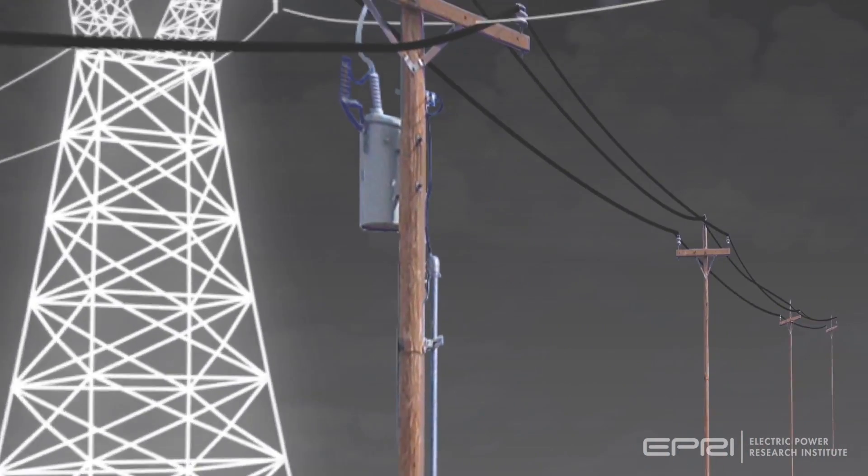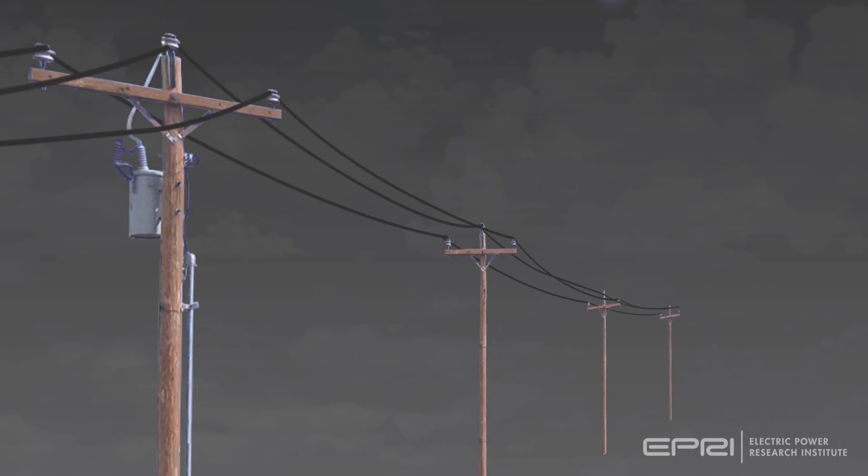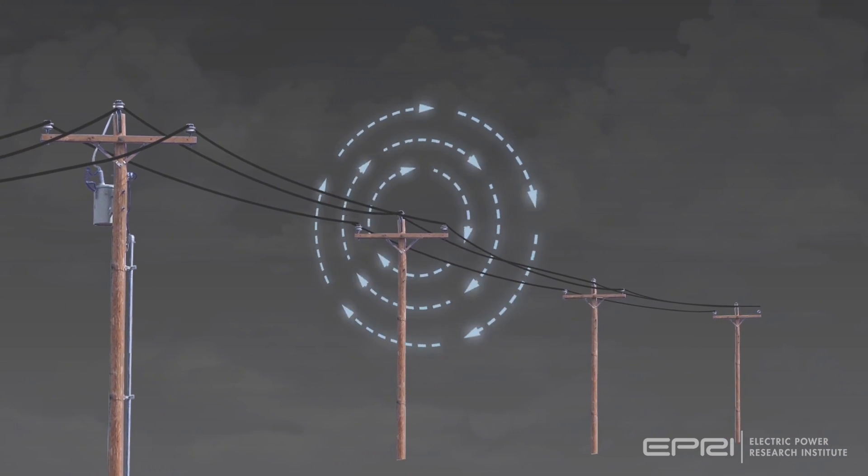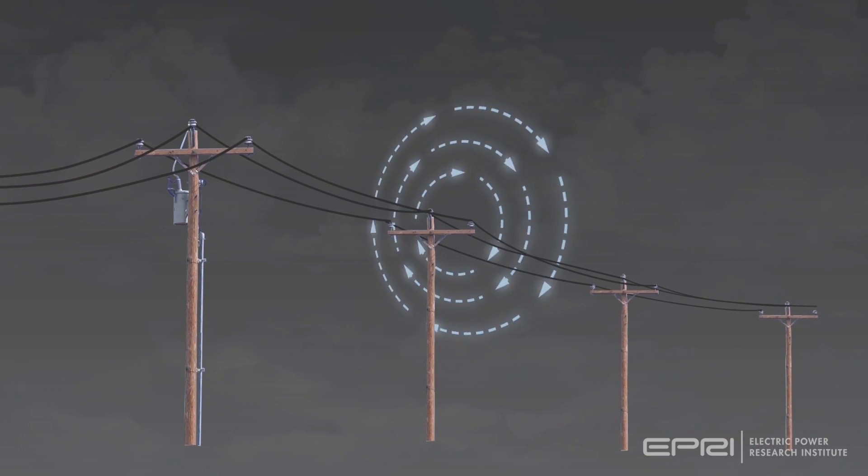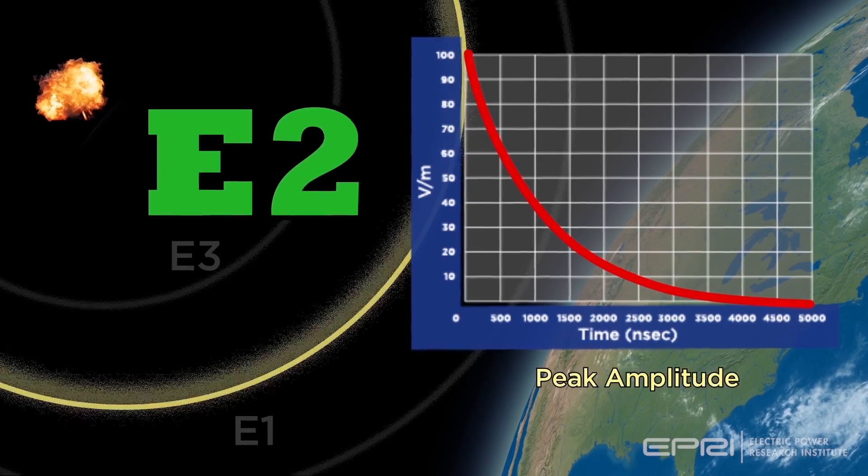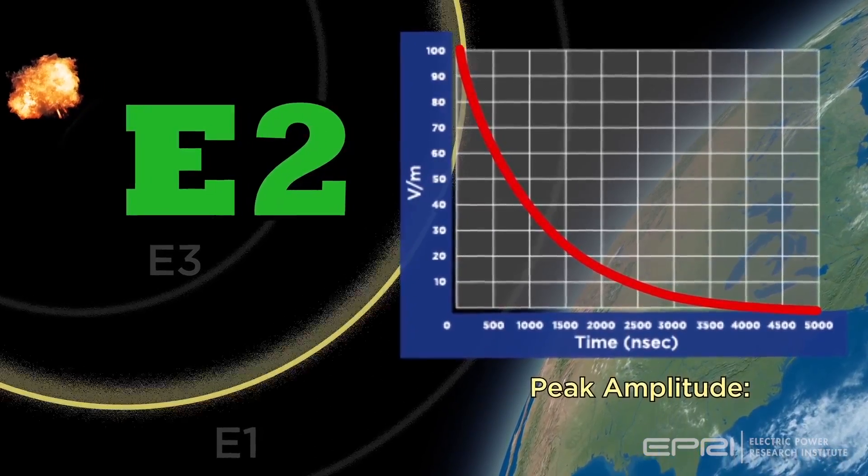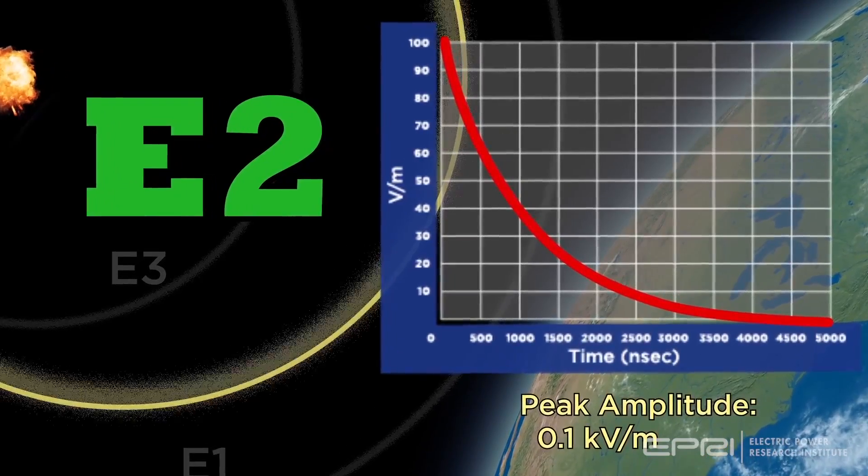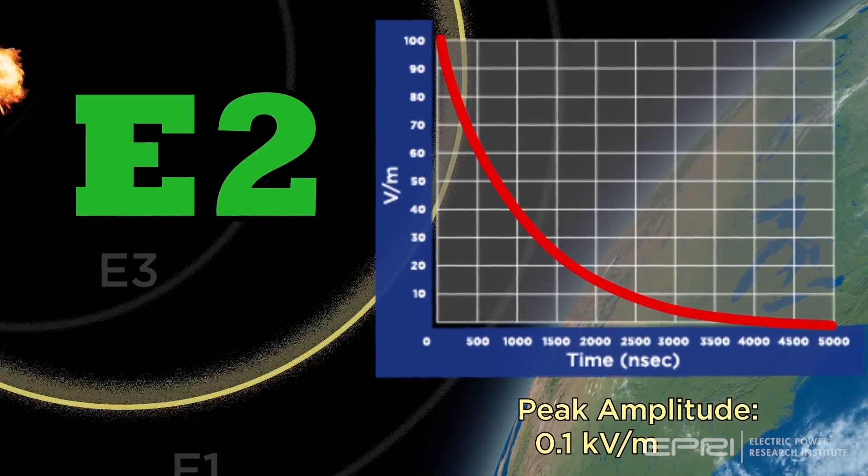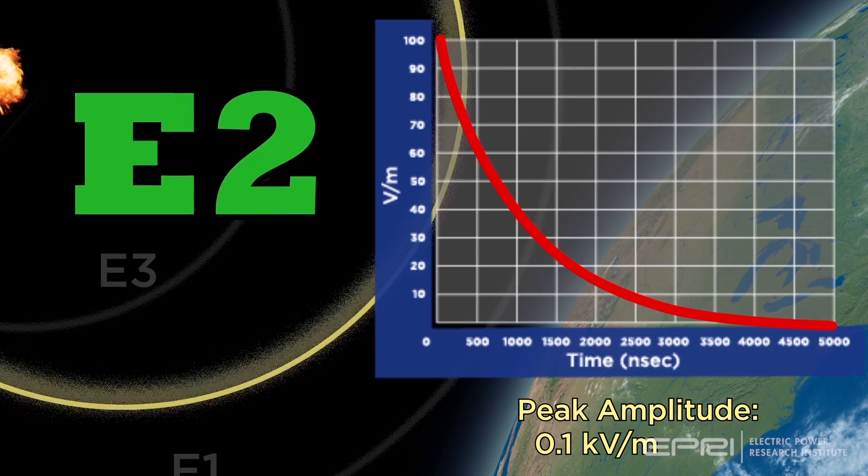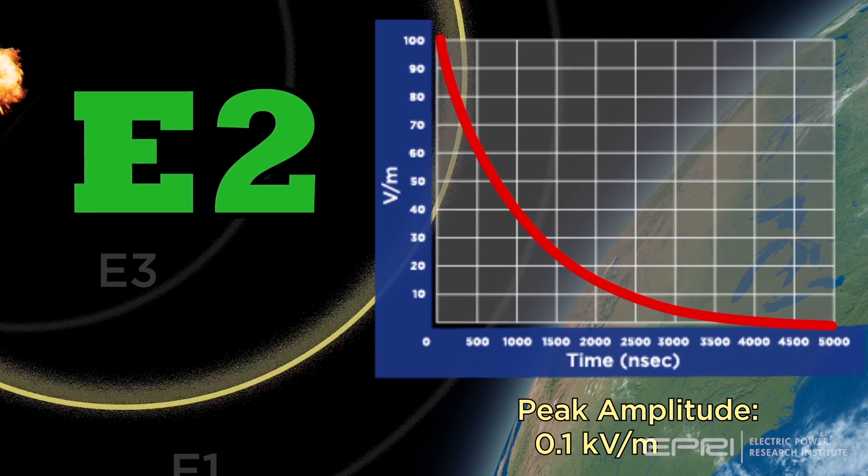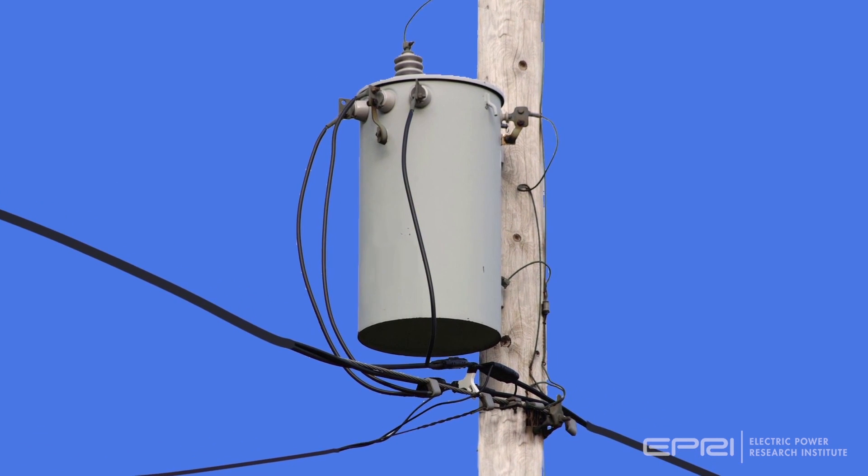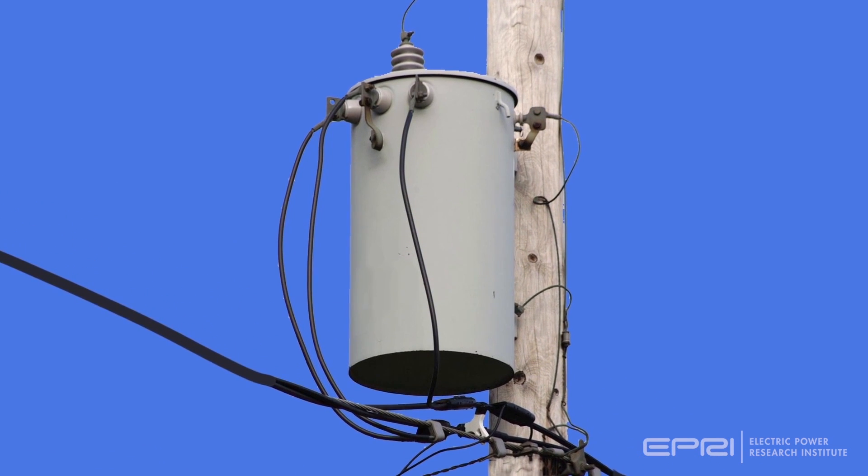But rather, it couples to electric infrastructure as a nearby lightning stroke would couple to a distribution line. Secondly, the peak amplitude of the E2 waveform has a peak amplitude of only 0.1 kilovolts per meter, far less than that of a typical lightning stroke and the E1 pulse that occurs immediately before the E2 pulse. As such, potential impacts to electronics and other power system components is expected to be minimal.